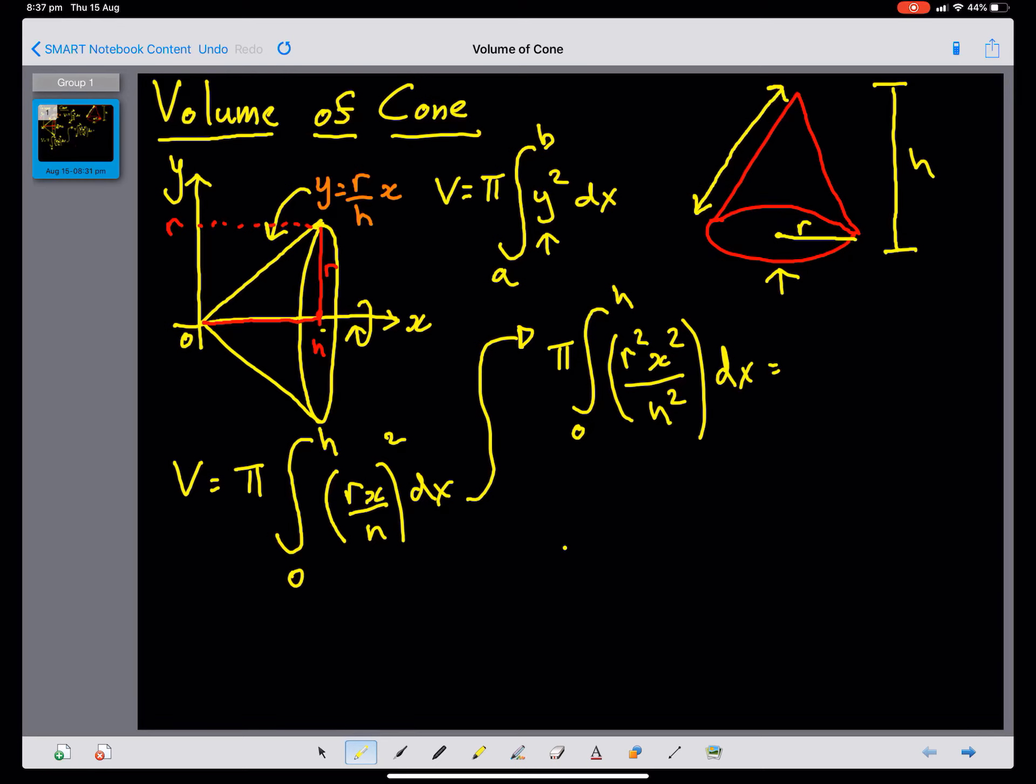And we can take out the R squared over h squared, and just treat that as a constant of integration, 0, h, x squared, dx.